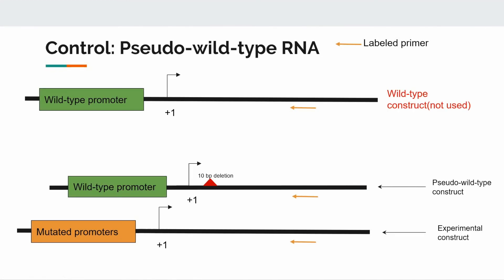The solution? Make a shorter version of the DNA sequence under the same wild type promoter, with about 10 bases missing downstream of the plus one, but upstream of the primer binding site.